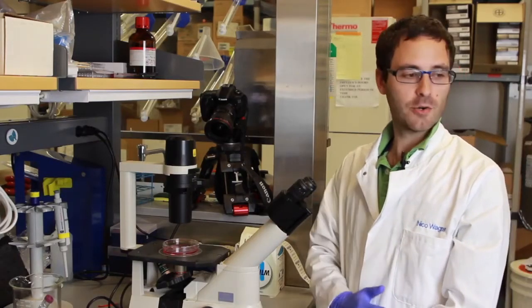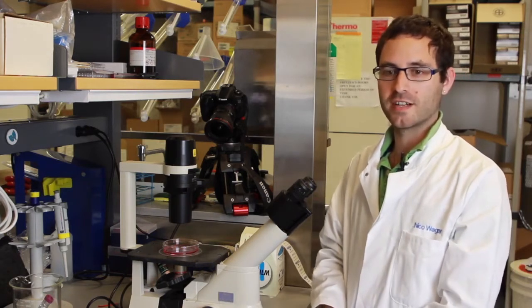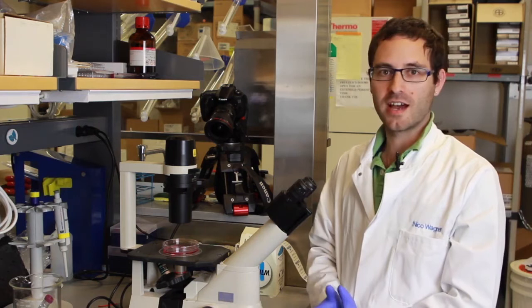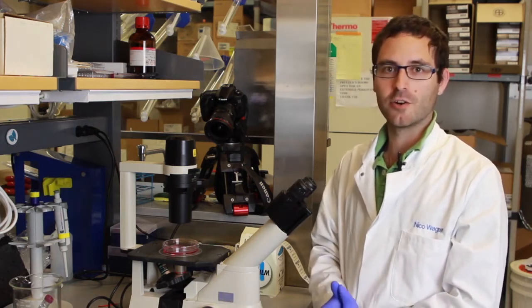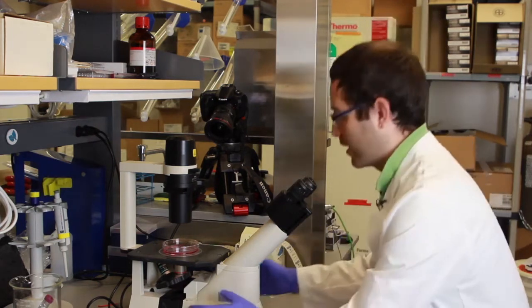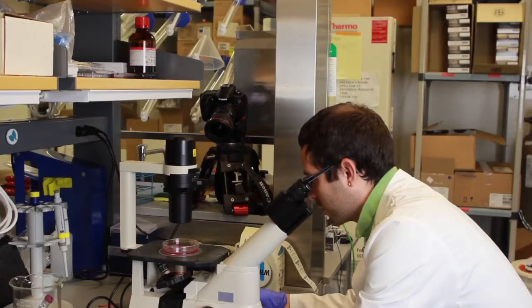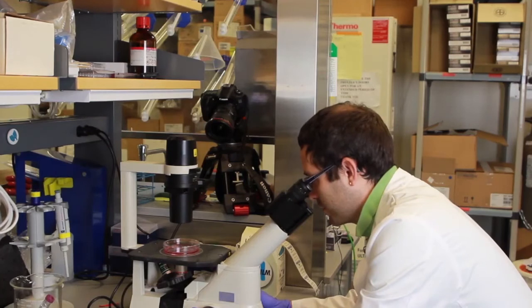Before I pass the cells and go into the hood, I like to take a peek at the cells under a microscope first. That'll tell me if they're still alive and doing well, and it'll tell me how confluent the cells are. I'll take a peek at these and these cells appear to be about 95% confluent, which is a good time to split them.